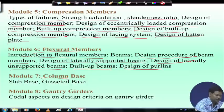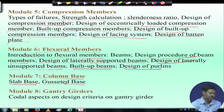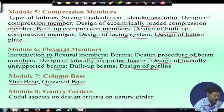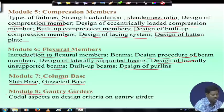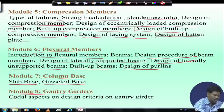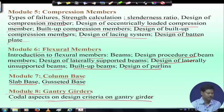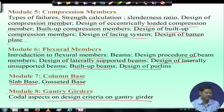Then we will come to column base — slab base and gusseted base — through which superstructure load is transferred to the soil via the substructure. Design of gusseted base, slab base, and base plate will be discussed. If time permits, we will also discuss gantry girder, which is an important component in steel structures. We will cover the loads coming on a gantry girder and how to design it.